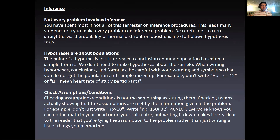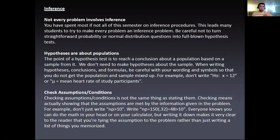Hypotheses are about populations. The point of a hypothesis test is to reach a conclusion about a population based on a sample from it. You don't need to make hypotheses about the sample. When writing hypotheses, conclusions, and formulas, be careful with your wording and symbols so that you do not get the population and the sample mixed up. For example, don't write that the null hypothesis is x-bar equals 12 or mu equals the mean heart rate of study participants — you want to phrase it in context of a population parameter.